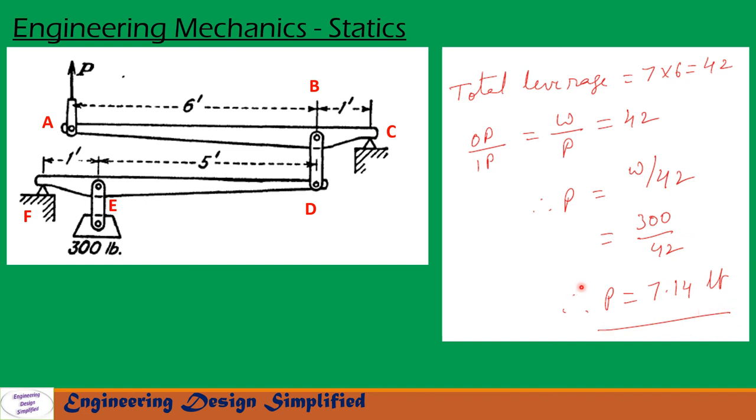A load P equal to 7.14 lb is required to keep this lever in equilibrium when a weight of 300 lb is acting here.